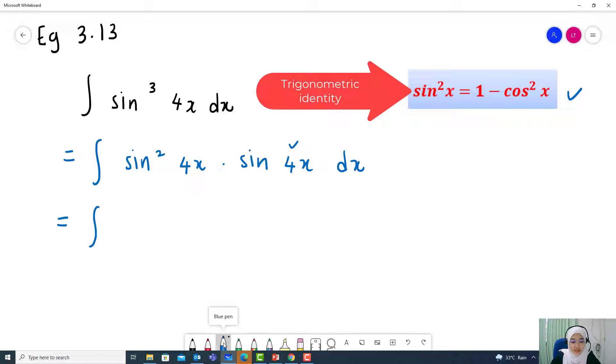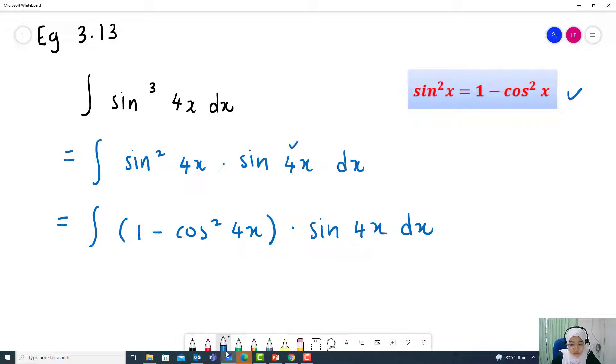Refer to the trigonometric identity. We will replace sin squared 4x with 1 minus cos squared 4x. Multiply sin 4x dx. Now, the reason why we want to put it in this form is so that we can do u substitution.